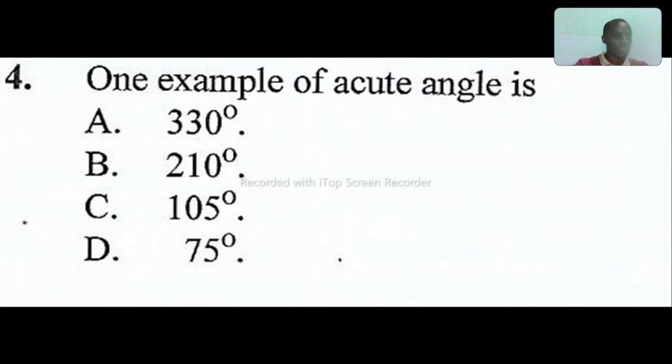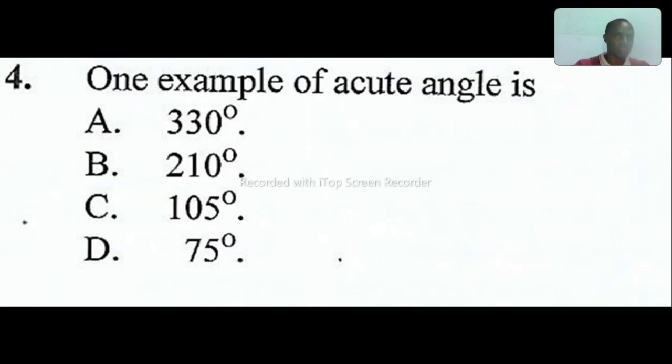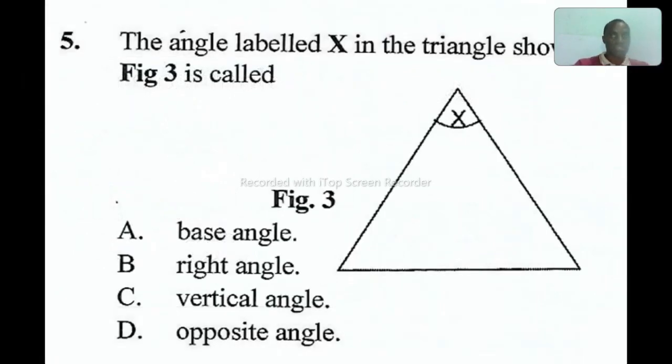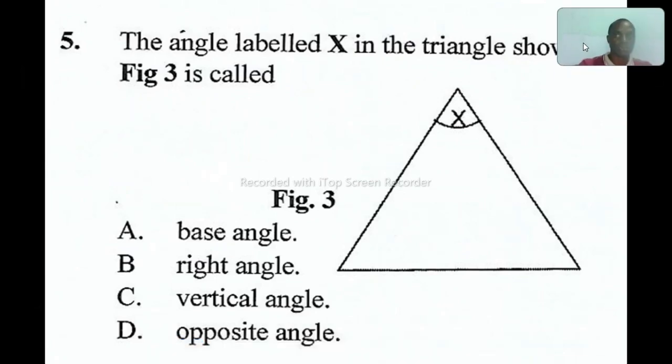Question number four: one example of an acute triangle. The answer is D. Acute triangle is less than 90 degrees. Question number five: the angle labeled X in the triangle shown in figure three is called vertical angle. If you draw a line from this place down, you will discover that the angle here is the vertical angle. The answer is C.